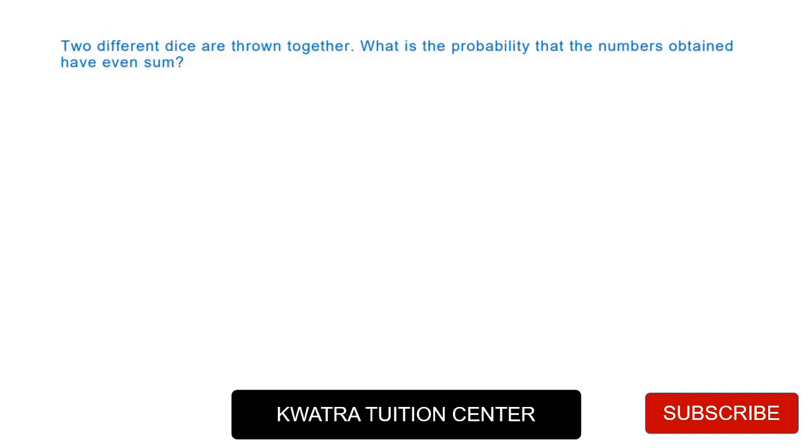Hello everyone, let's start with a new question. In this it says two different dice are thrown together. What is the probability that the numbers obtained have even sum? So how should our sum be even? It should be even. And here information is given that there are two dice.